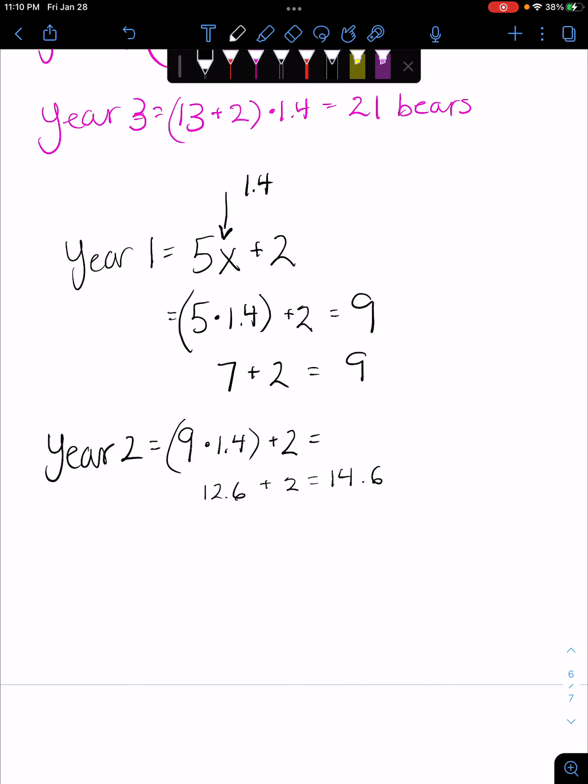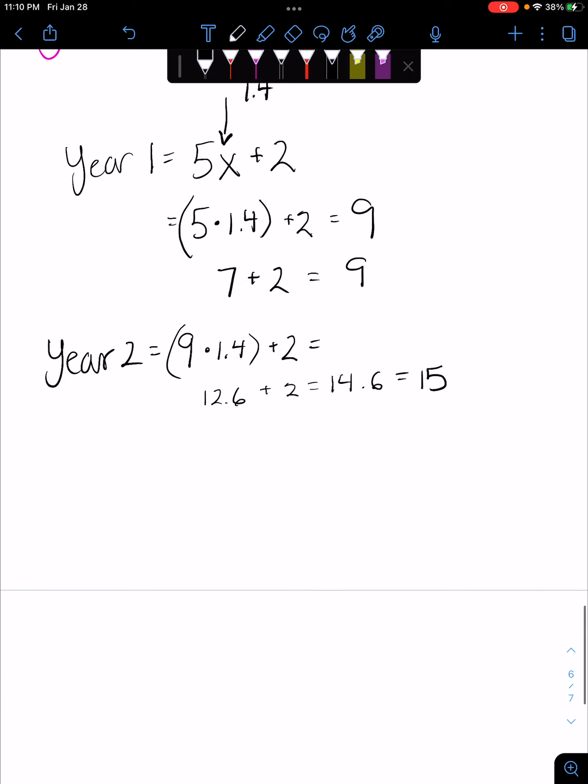And then we go nine times 1.4, that's 12.6 plus two, that equals 14.6. Oh sorry, that's not supposed to be a 12, that's supposed to be a two. And then we know that we have to round it up to 15 because we can't have 0.6 of a bear. And year three, well we start with 15 times 1.4, then we add our two. 15 times 1.4 is 21 plus 2, that equals 23. Perfect, nice and even. 23 bears. The population is growing, fantastic for them.